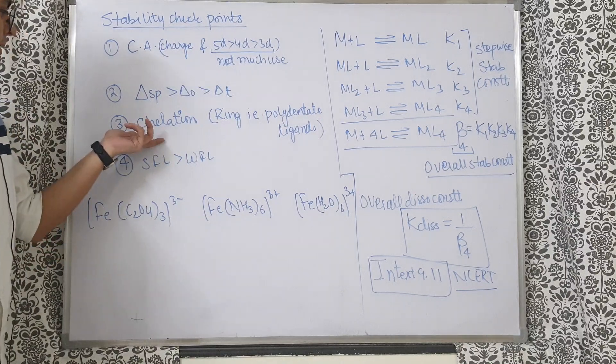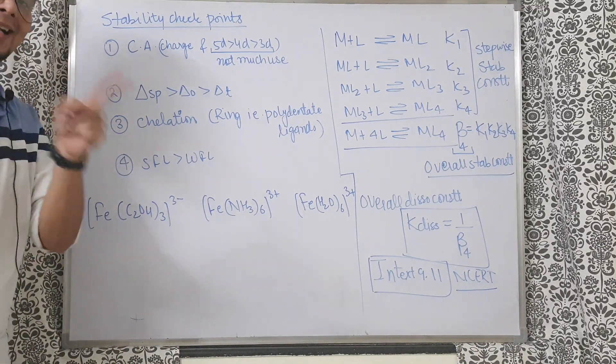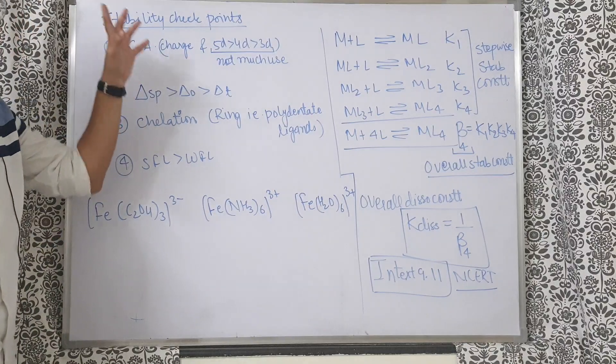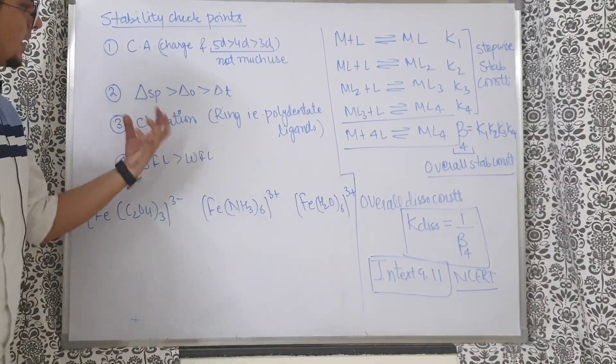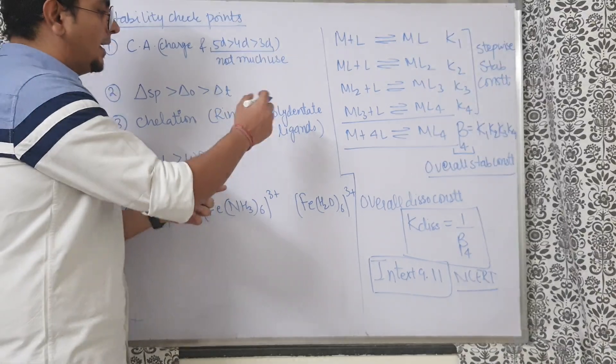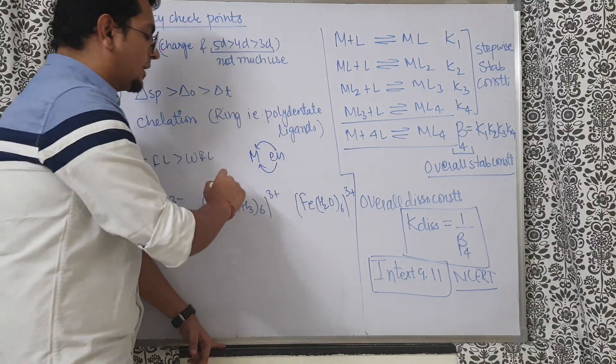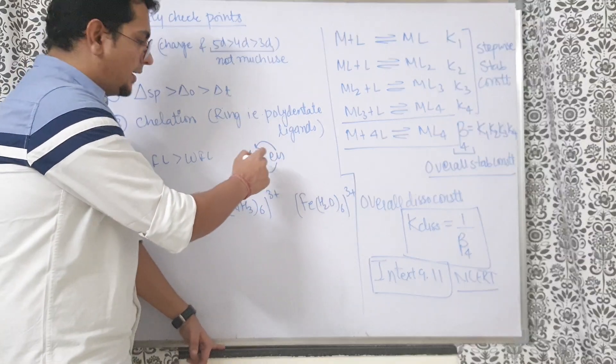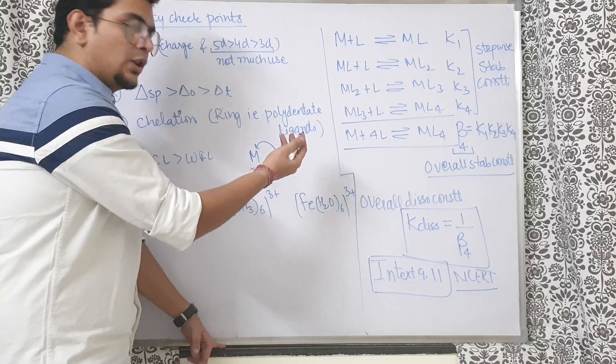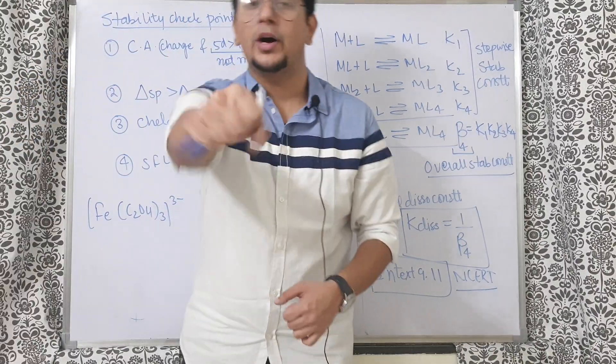Third thing you should check is chelation. Chelation does not decide delta, but it decides the stability. What is the meaning of chelation? Chelation means ring formation. When you have a polydentate ligand - bidentate, tridentate - we understand very well when we have bidentate, tridentate ligand, ring will be formed, and rings give stability to the complex.